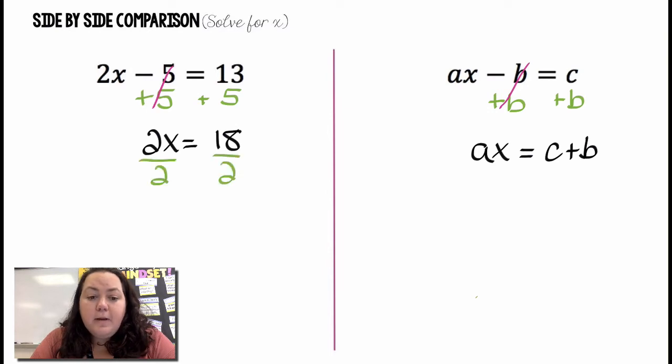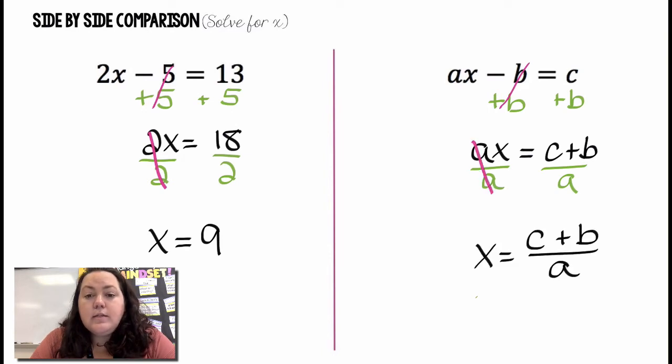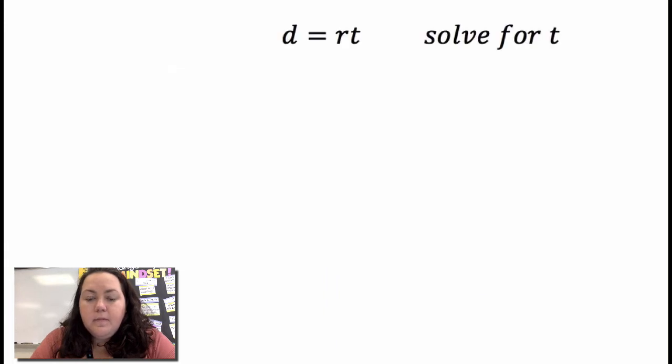On the left I would then divide by 2 and those would cancel and I would get x equals 9. On the right side I would divide by a because I'm trying to get x by itself and those would cancel and I get x equals c plus b over a. And then there's nothing else I could do so x equals c plus b over a.